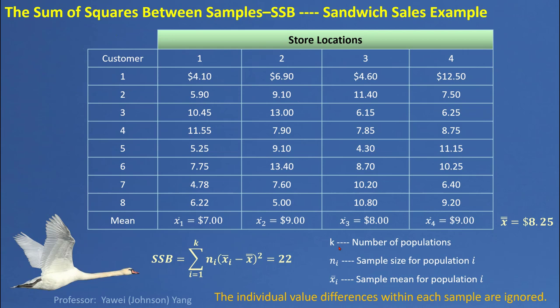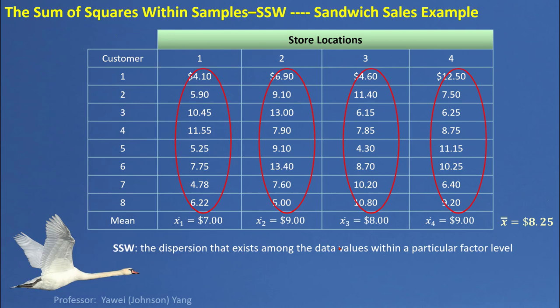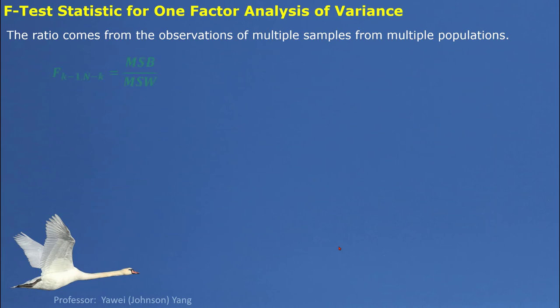Individual value differences within each column or each level are ignored when we use each column's center value to represent every possible value. We then consider each sample or each column, calculating the sum of squares within each column and putting them together. This individually described variation is called the sum square within. The relationship is that sum square within and sum square between together equal the sum square total. The F ratio comes from mean square between divided by mean square within, where each mean square comes from its respective sum square divided by the corresponding degrees of freedom.